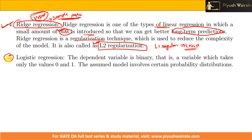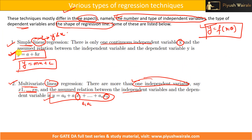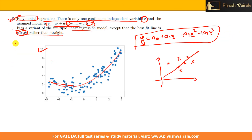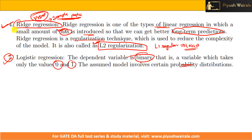Logistic regression is where the dependent variable is binary — taking only the values 0 and 1. The assumed model involves a certain probability distribution, which we will discuss in detail when we cover logistic regression. That's it from this video. We discussed regression and different types of regression techniques. Starting from the next video, we will begin with simple linear regression, then multivariate linear regression, and then ridge regression.